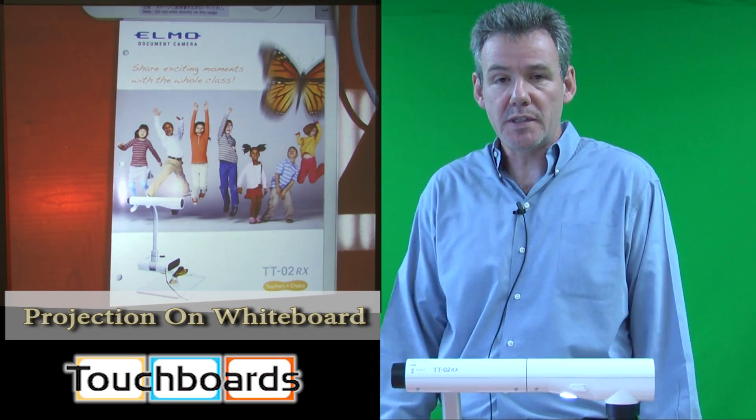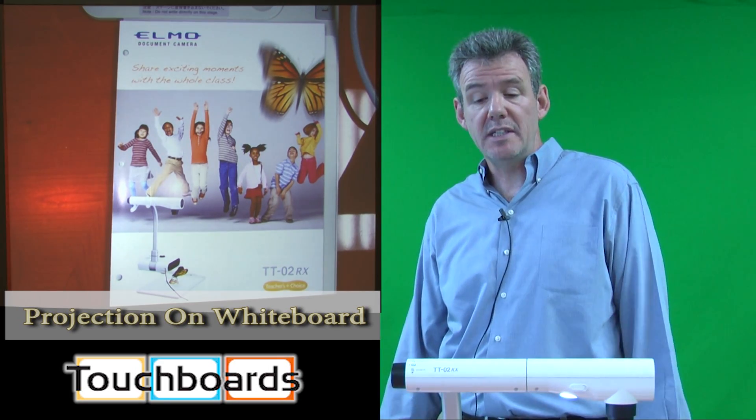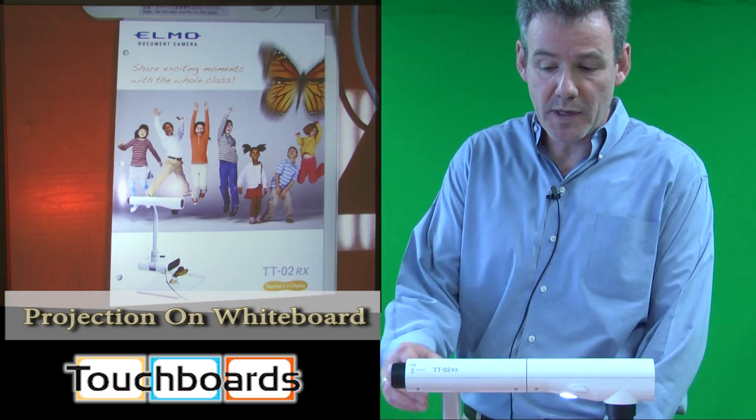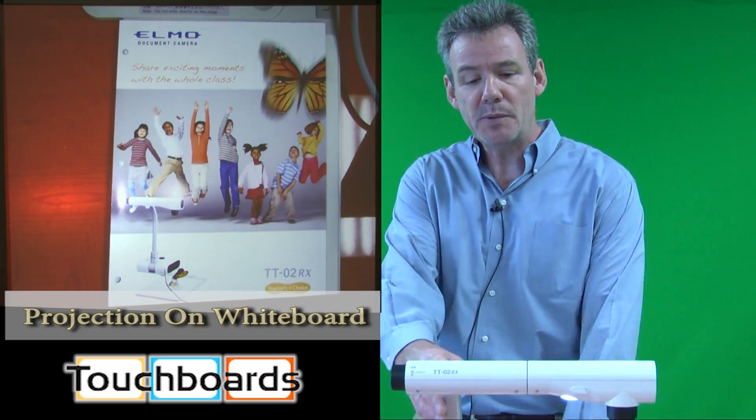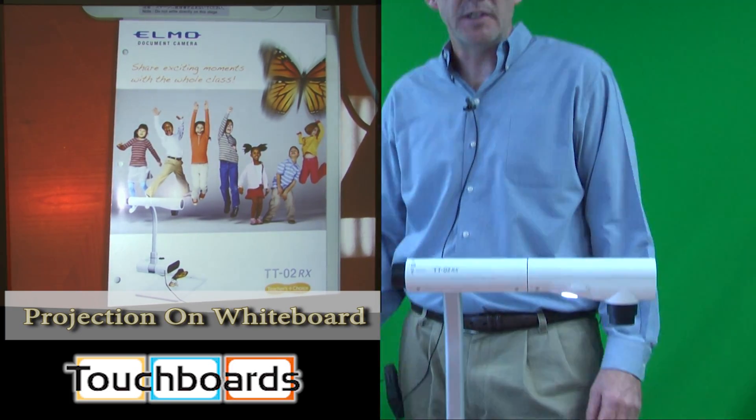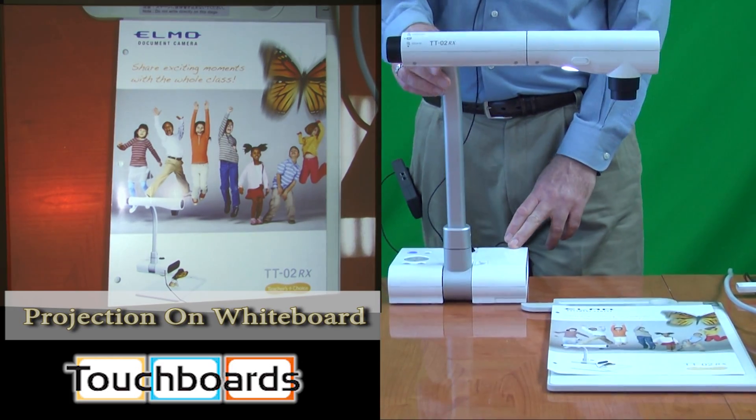Good morning, thanks for joining us at TouchBoards today. Today we're talking about the Elmo TT-02RX, which is one of the most popular document cameras on the market for K-12 usage. We're just going to run through some of the main features of the unit.